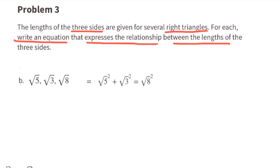B: The square root of five squared plus the square root of three squared equals the square root of eight squared. That's true because five plus three equals eight.